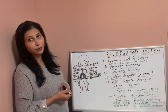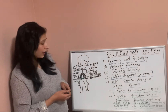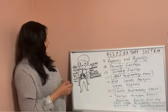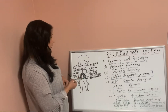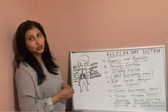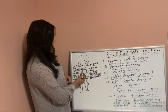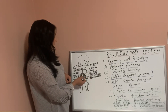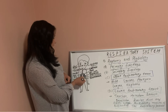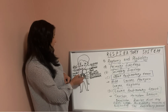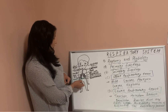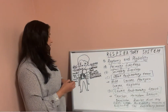In the lower respiratory system, there is the trachea, bronchi, bronchioles, alveoli, alveolar duct, and lungs. The trachea is below the larynx and above the carina. At the carina, the trachea divides into the left and right bronchi. The right bronchus is slightly broader than the left.